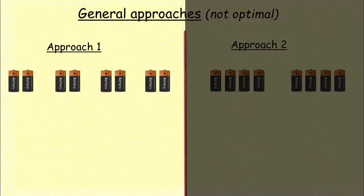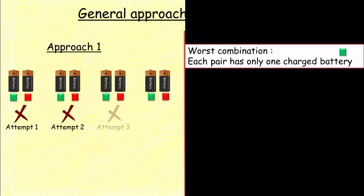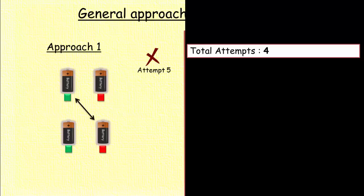With first approach, the worst combination to be considered is that each pair has only one charged battery, so that we fail in all four attempts. Then consider any two pairs. With these four batteries you can have four more combinations and again consider the worst case scenario as you light up the torch in the last attempt. So it took eight attempts in total.